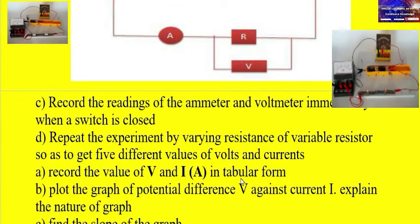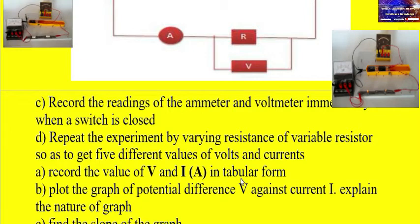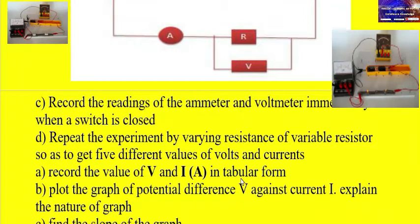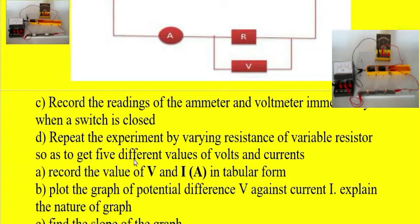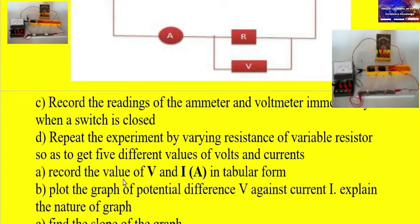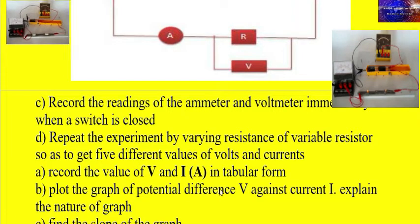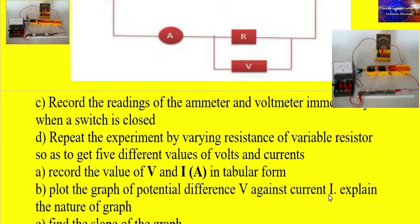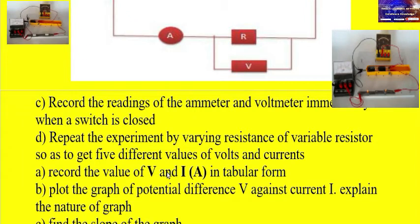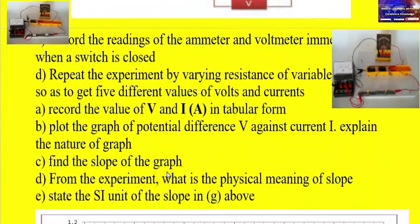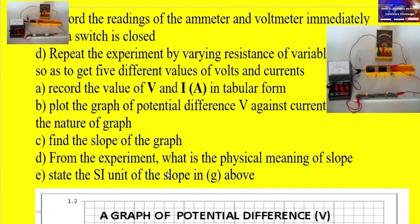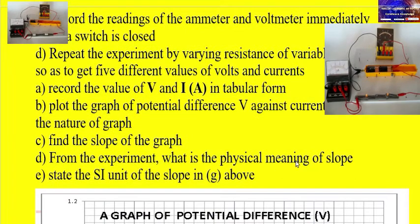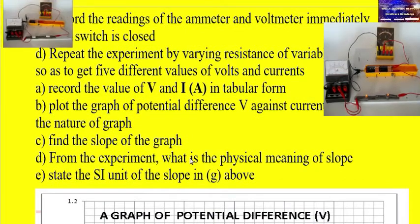Record the values of V and I in tabular form. Then plot the graph of potential difference against current and explain the nature of the graph. That is the procedure. Within the exam questions, the graph is potential difference (V) against current (I). After plotting the graph, explain its nature. Another question: find the slope of the graph, and from the experiment, state the physical meaning of the slope.